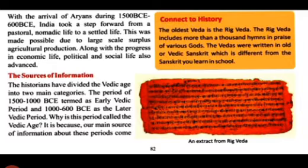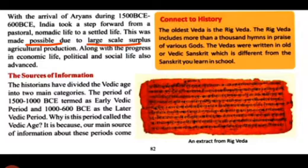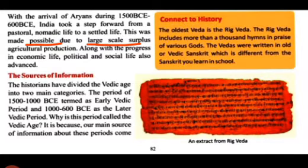This was made possible due to large-scale surplus agricultural production. Aur ye sambhav ho saka due to large-scale surplus - yani ki bahut adhik matra mein agriculture. Jaise ki gehu, jawar, bajra, ya chawal uga kar, unke use ke alawa bhi jo unke paas extra bacha tha, toh unke paas bahut zyada agriculture production surplus tha.